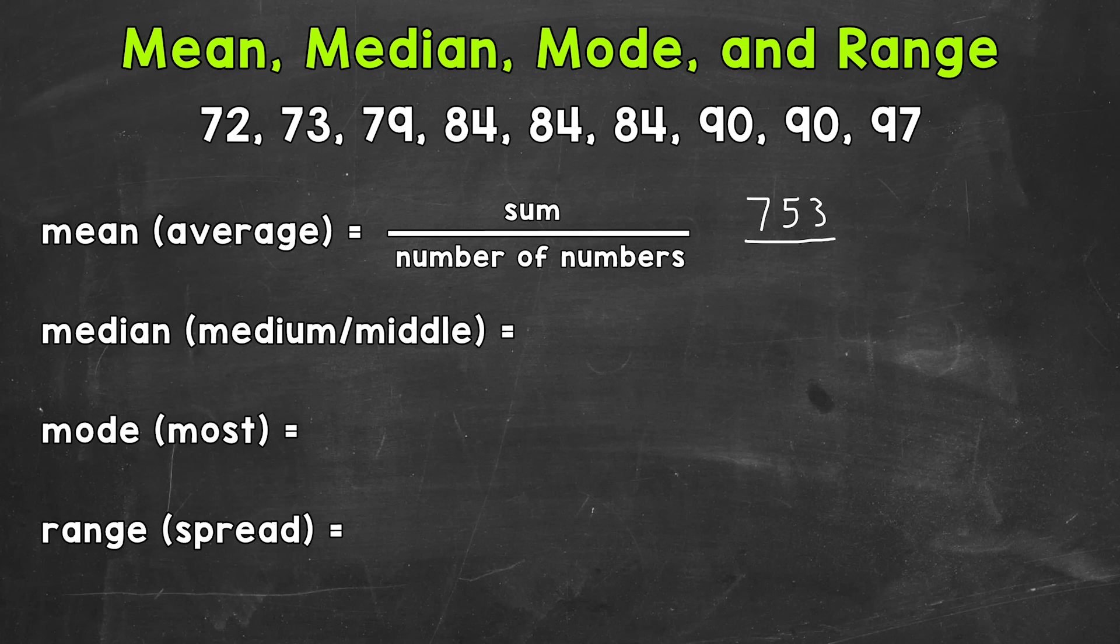Making sure to include all of the numbers within our data. So 753 is our sum. And then we divide by the number of numbers within our data. So let's see here. 1, 2, 3, 4, 5, 6, 7, 8, and 9. So 9 numbers, 753 divided by 9 is going to give us our mean.